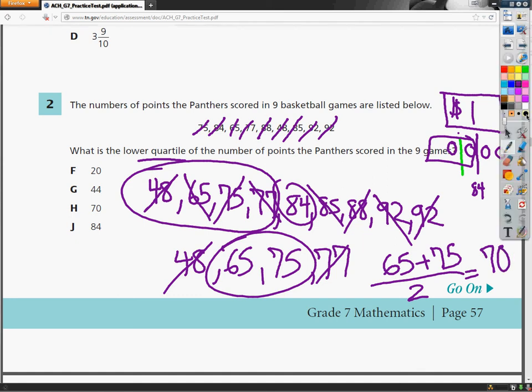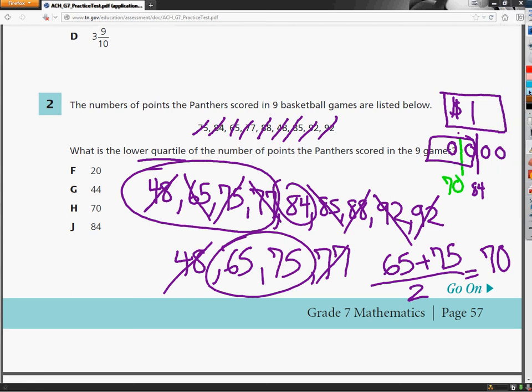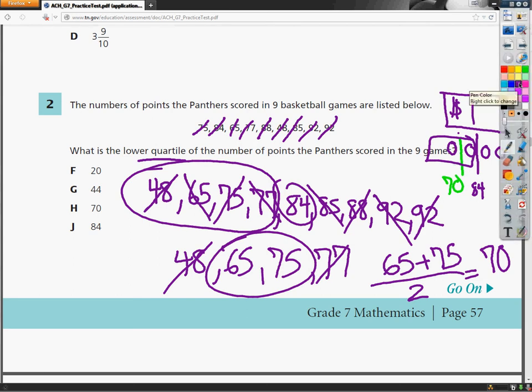So after all that work, we find out that that green line, in our scenario right here, is 70. Which is one of the answers, H.